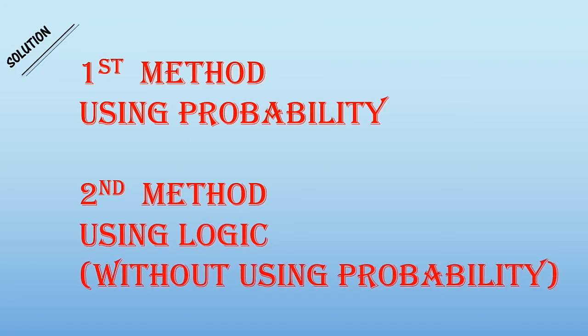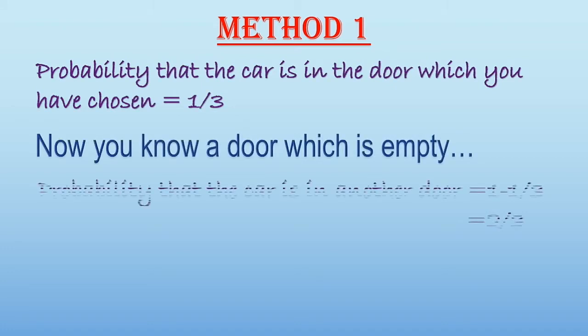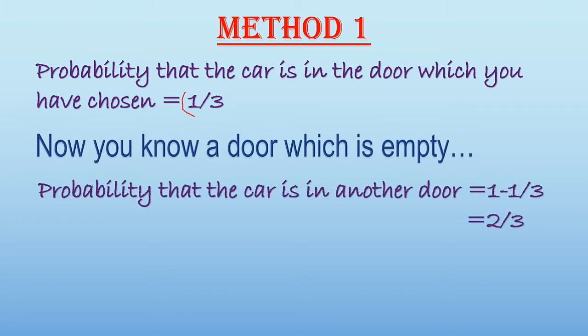So here is the first method using probability. Now, if you have three doors and you select a door, the probability that you chose correctly is one by three. You are going to choose one door.